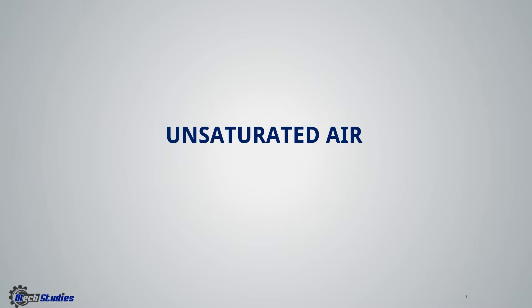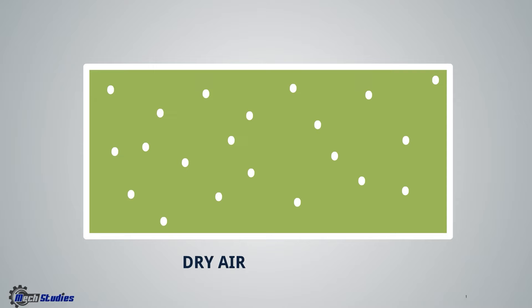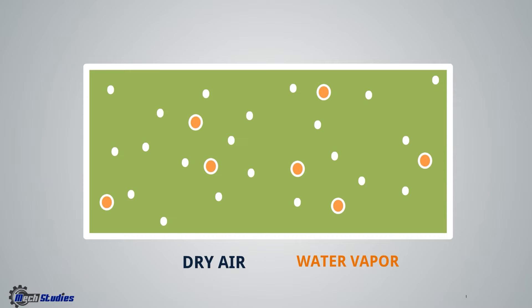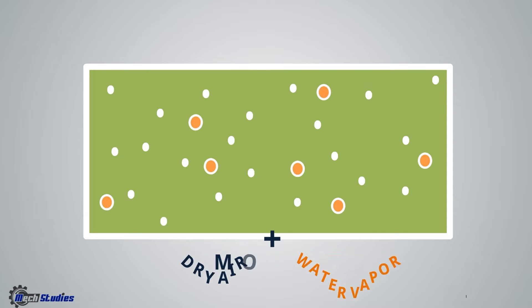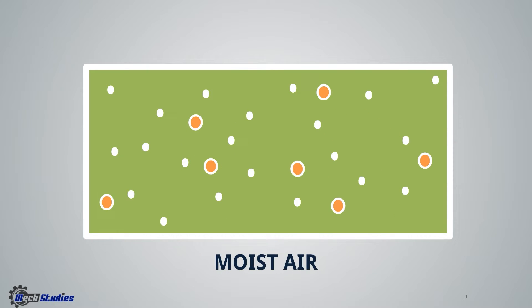What is saturated air and unsaturated air, and what does saturation mean? Let's see the diagram of air. This shows the gas molecules present in the air — that is dry air — and this is the water vapor. Water exists in the air as vapor, so this air consists of dry air and water vapor, which means this air is moist air.